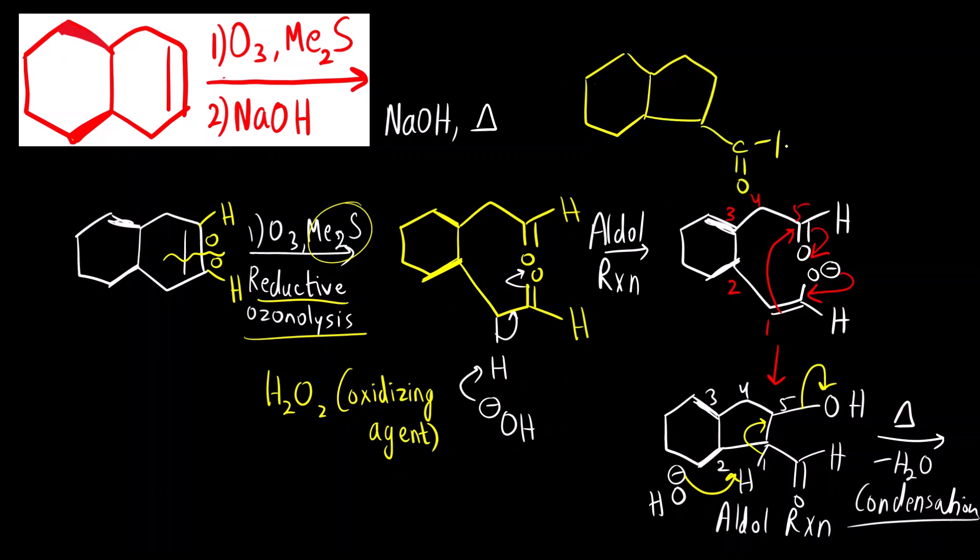C double bond O H, here double bond is formed. So alpha position, carbon next to carbonyl carbon is alpha, beta. So this is called alpha, beta unsaturated ketone that is formed.